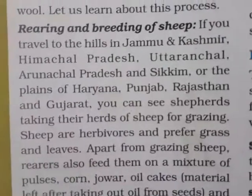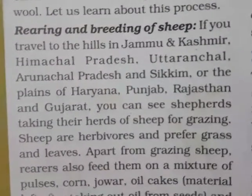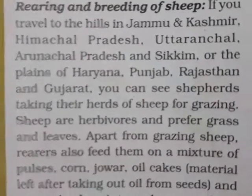We can see shepherds taking their herds out for grazing. Sheep are herbivorous, so they mainly eat grass and leaves. Apart from that, shepherds also give them nutritious food like pulses, corn (called Makai), Juwar, and oil cakes.